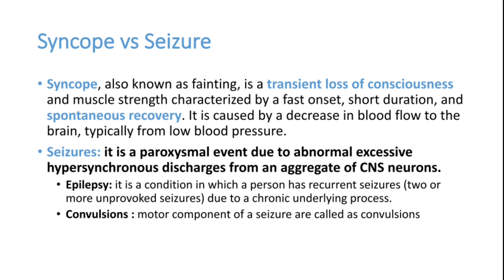In seizure, there is abnormal and excessive electrical activity from the CNS. In GTCS, the patient can have loss of consciousness, and after regaining consciousness, the patient can have post-ictal confusion. In syncope, the patient regains consciousness with normal mentation, whereas in seizure, post-ictal confusion is very common.